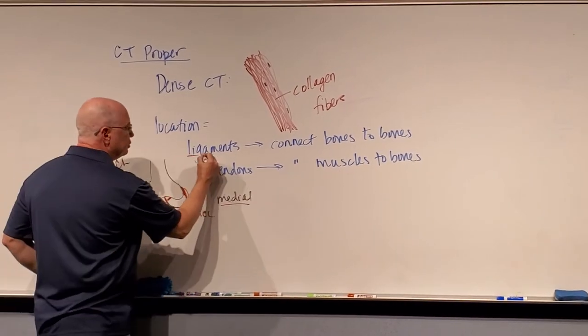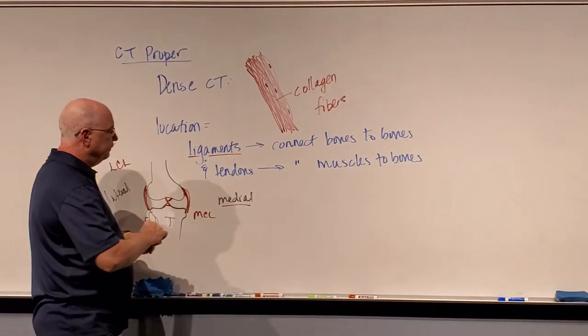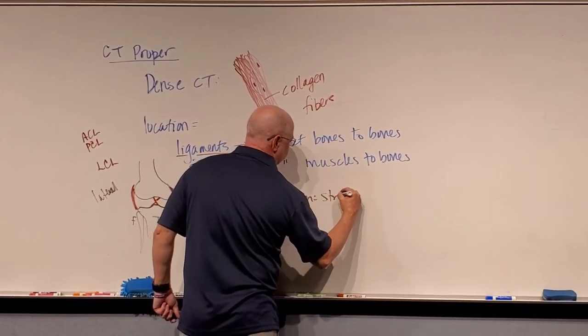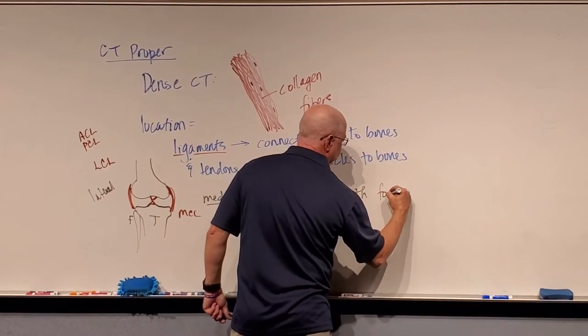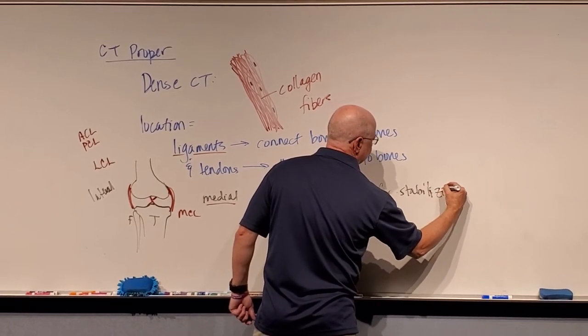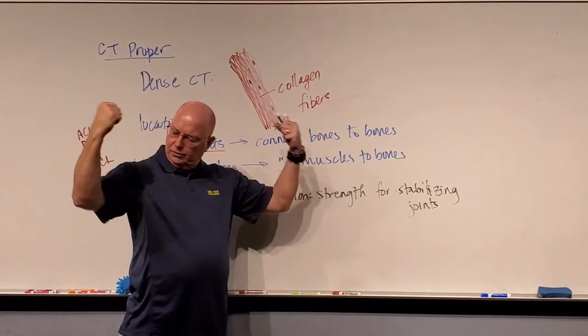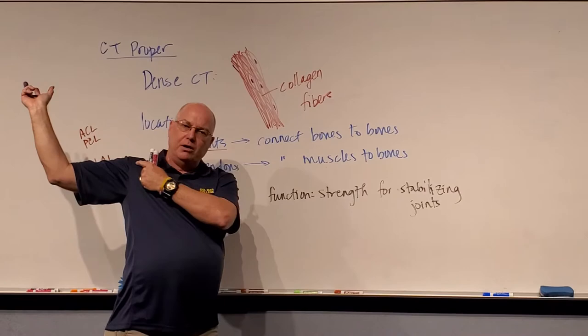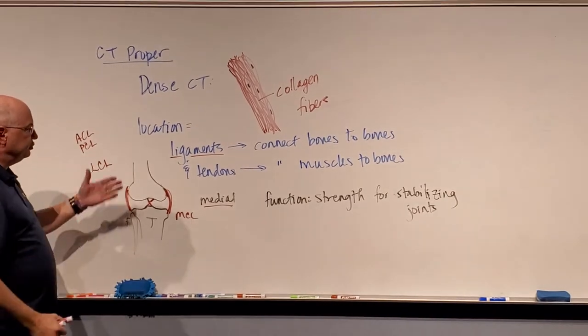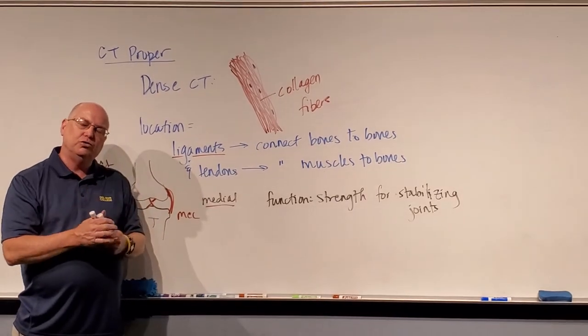What those ligaments all do is they help to stabilize the knee joint. So the function of this tissue is strength for stabilizing joints—not just your knee, but many other joints in the body: the elbow, the wrist, all of your movable joints, the shoulder. When we're throwing a ball, all those ligaments are helping the joints not rip apart under stress. Those are the ligaments. They connect bones to bones at joints and help stabilize or hold the joint together.